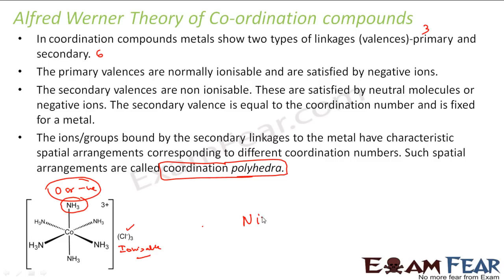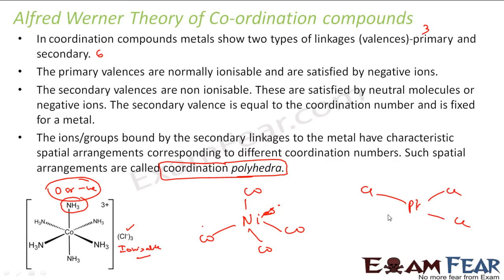We also have tetrahedral arrangement — for example, Ni(CO)4 is tetrahedral. And we have square planar also — for example, Pt(CO)4 is square planar. We will talk more about these shapes and how to determine them in the next few slides. Werner discussed these various shapes and stated that the most common shapes for coordination compounds are octahedral, square planar, and tetrahedral, though other shapes are also possible.